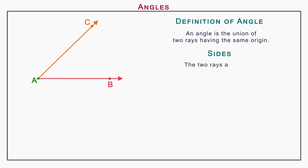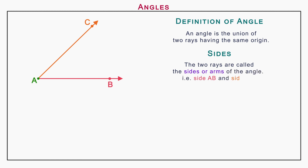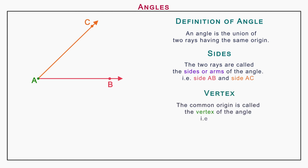The two rays are called the sides or arms of the angle, i.e. side AB and side AC, and the common origin is called the vertex of the angle, i.e. vertex A.